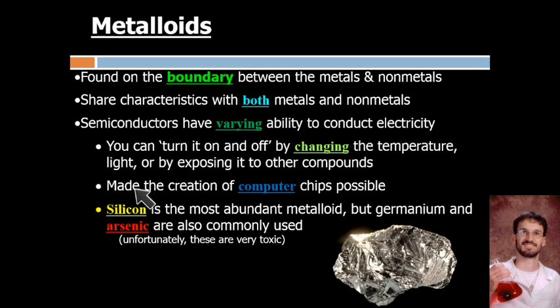The most abundant metalloid is silicon. If you think of sand, there's silicon everywhere. Other commonly used metalloids include germanium and arsenic — and you've probably heard that arsenic is poisonous, one of those non-metal properties where it's very toxic to living things. Silicon, on the other hand, is not toxic. Some living things even make things out of silicon. That's why the technology hub in California is called Silicon Valley.